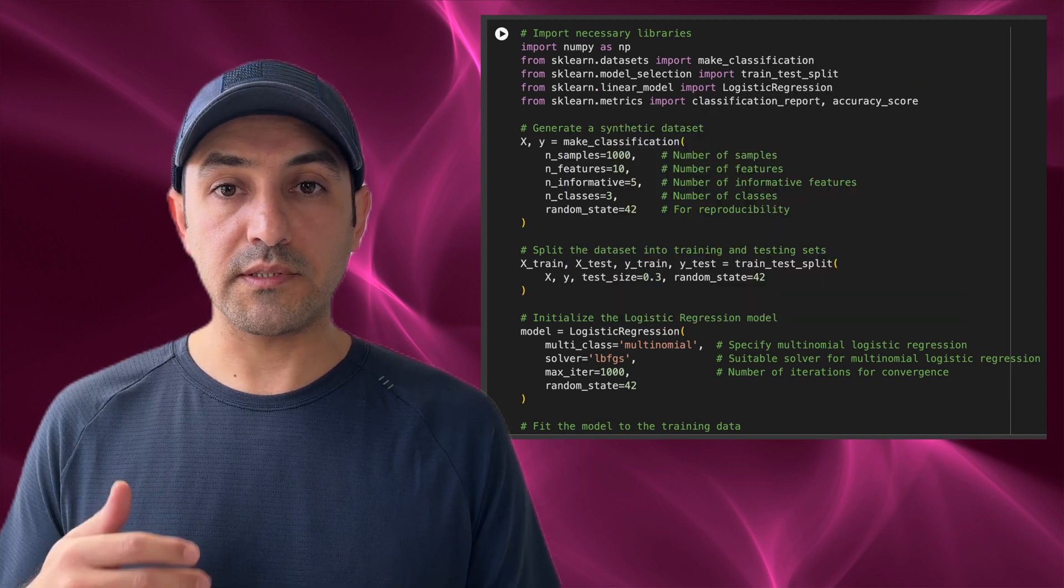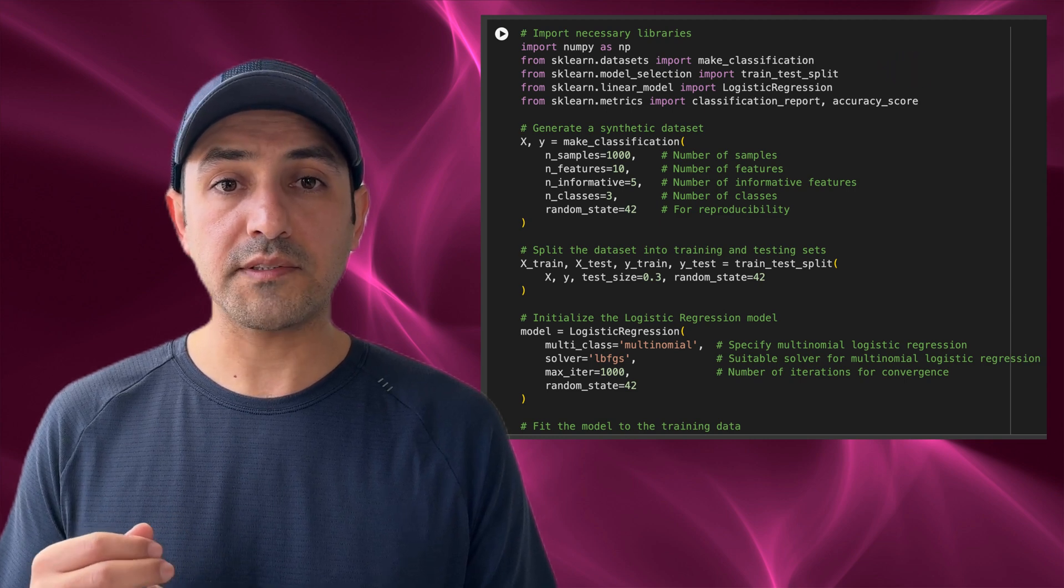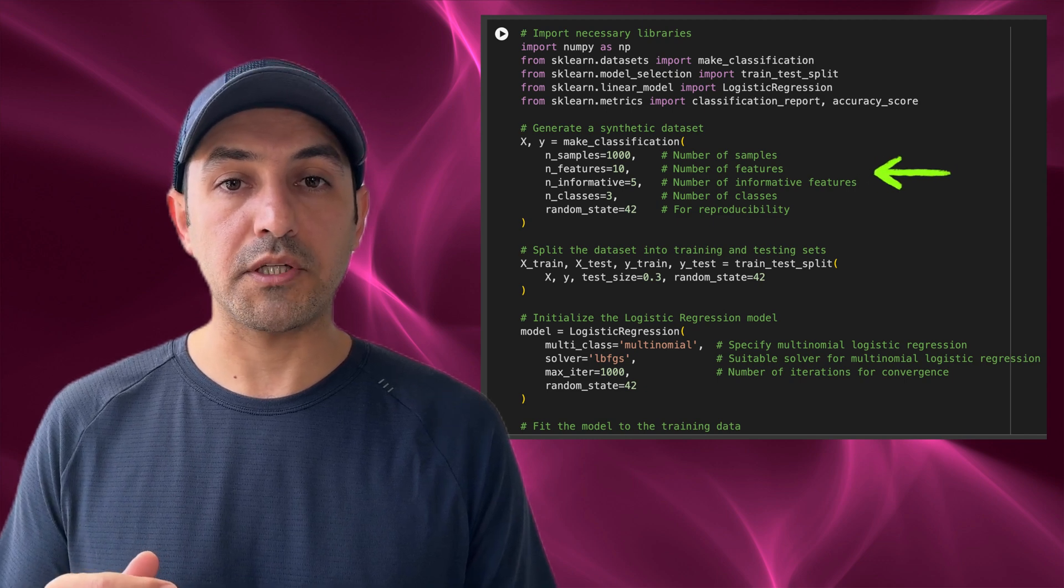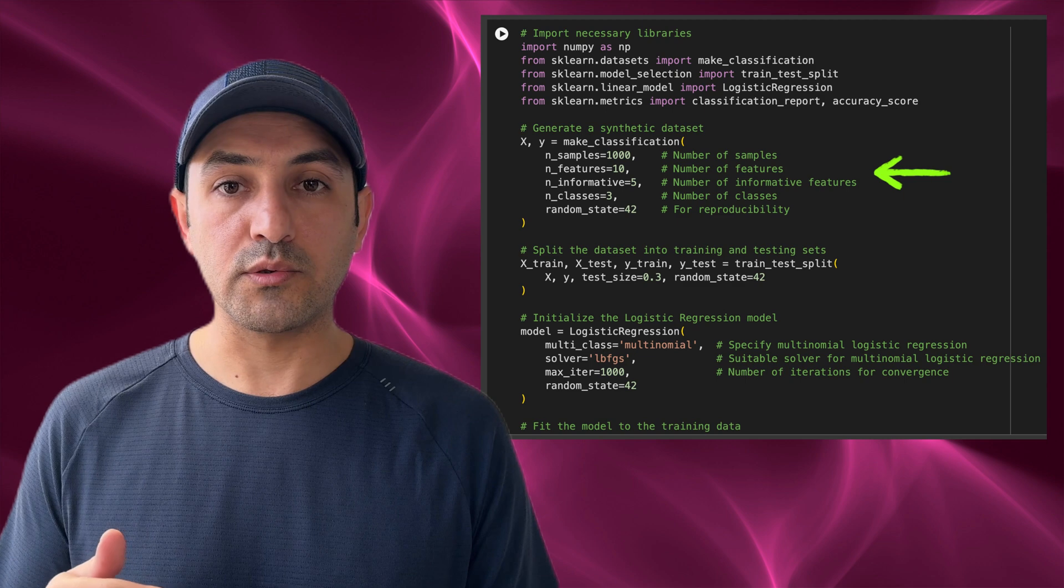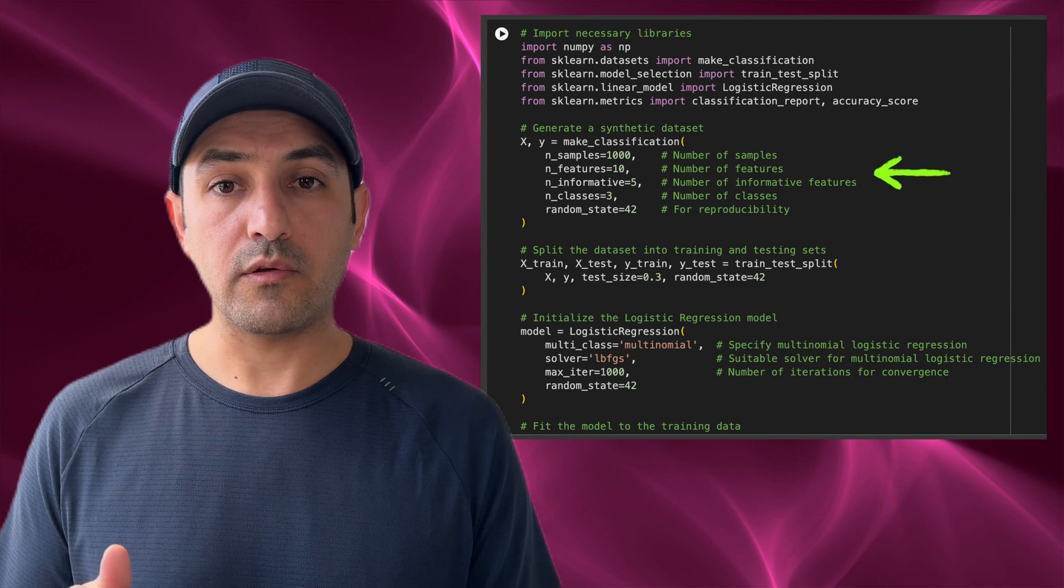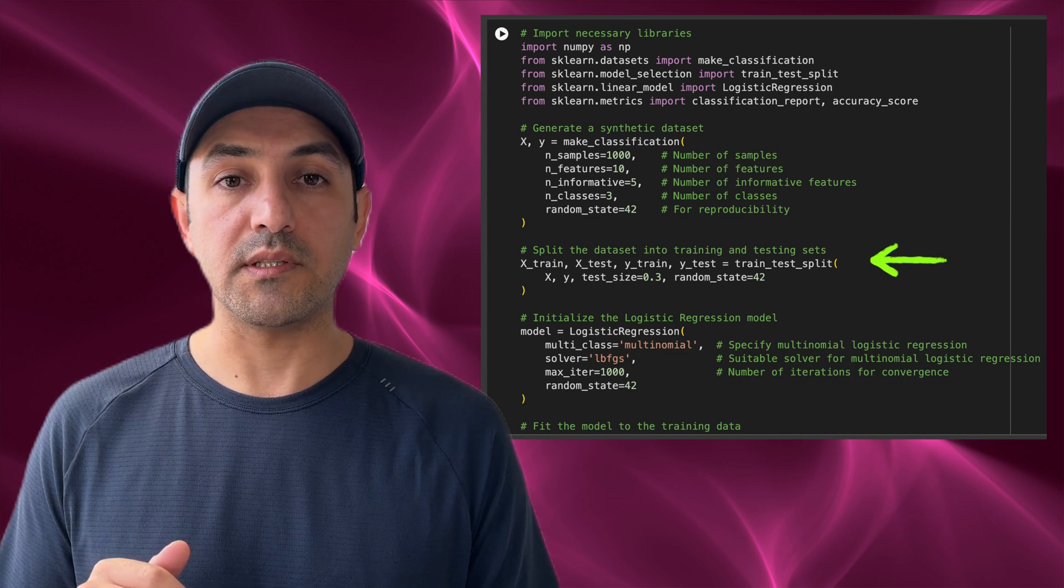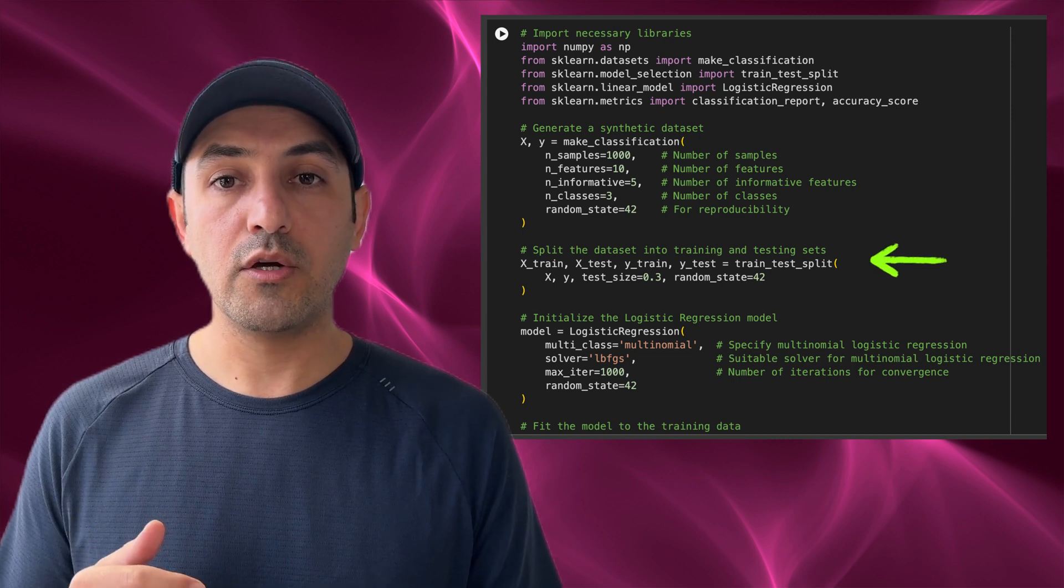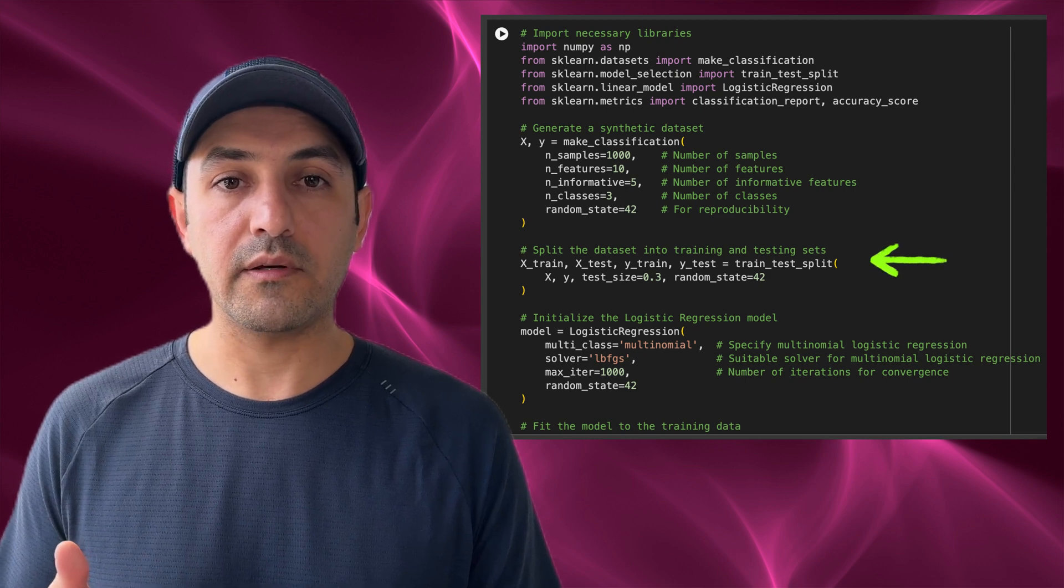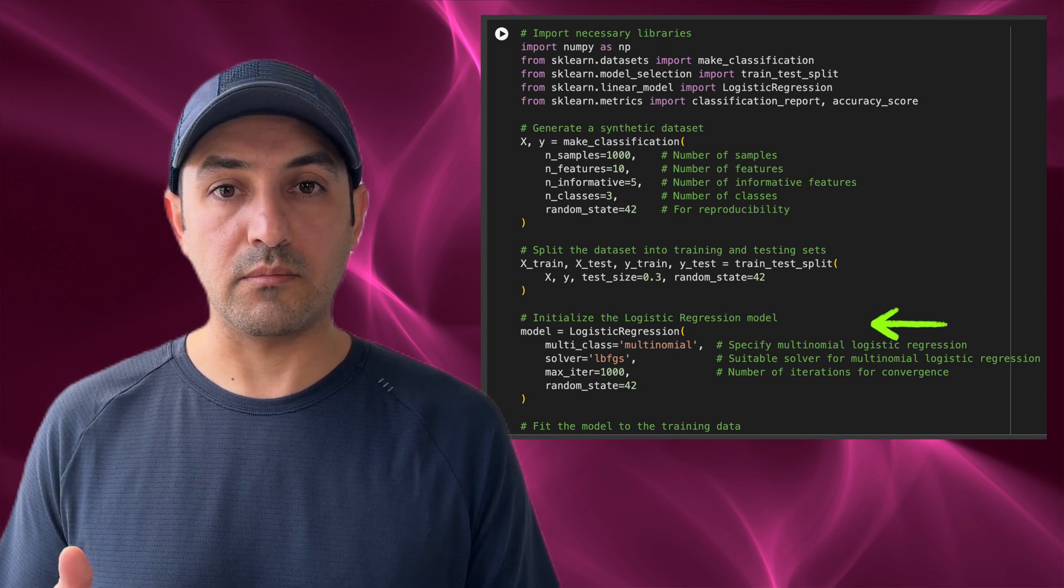This code demonstrates how to perform multinomial logistic regression using the scikit-learn library in Python. First, a synthetic dataset is created using the make_classification function. This dataset includes 10 features, five of which are informative, and three target classes. The dataset is then split into training and testing subsets using the train_test_split function to ensure the model is evaluated on data it hasn't seen during training. The logistic regression model is initialized with the multi_class equals multinomial parameter, which tells scikit-learn to use the multinomial approach rather than one-versus-rest for classification.